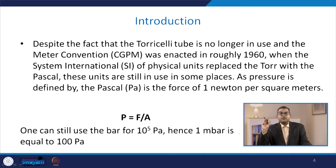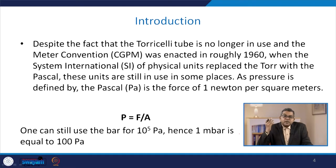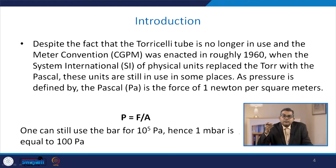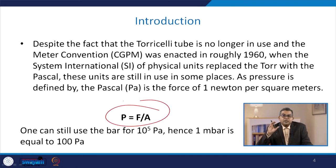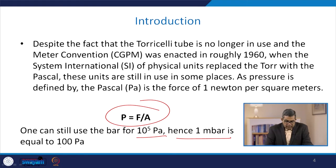Despite the fact that the Torricelli tube is no longer in use, the metre convention CGPM enacted in roughly 1960 — when the Système International (SI) of physical units replaced the torr with the Pascal — defines pressure as a force of 1 Newton per square metre: P = F/A. One can still use the bar for 10⁵ Pascal; hence 1 millibar equals 100 Pascal.